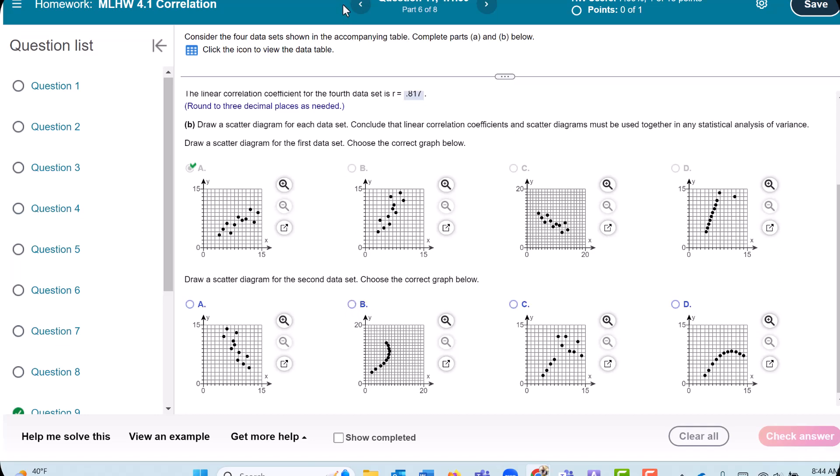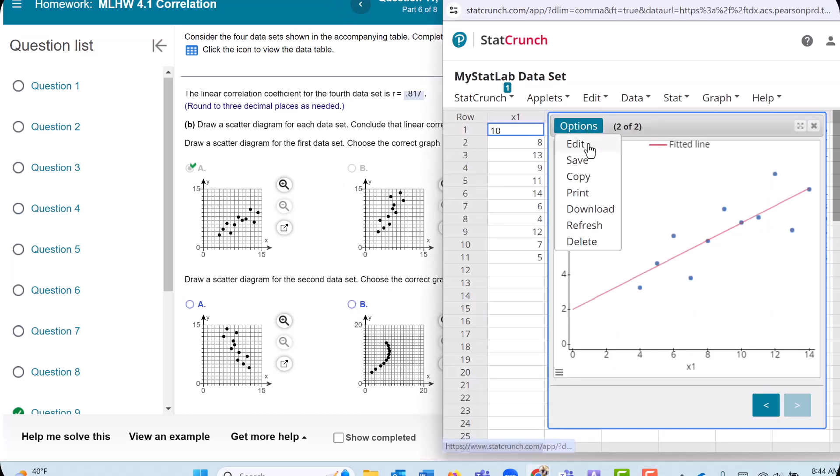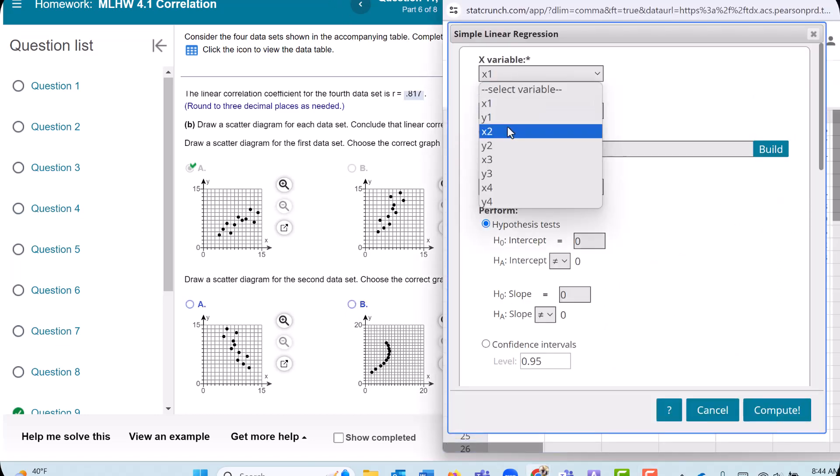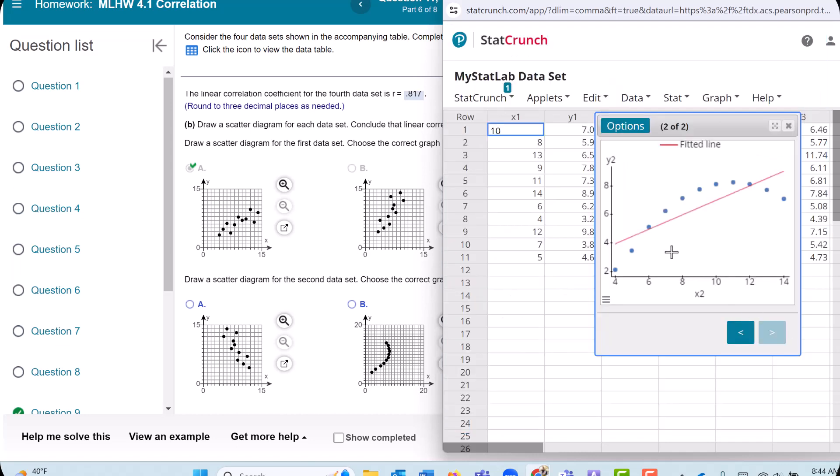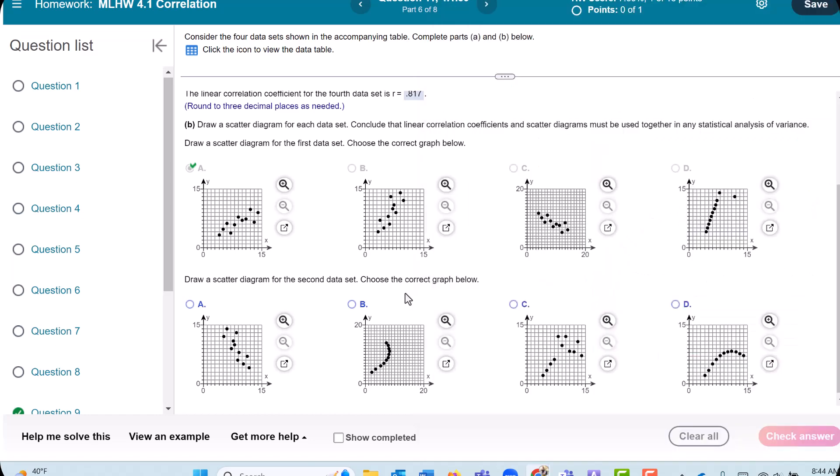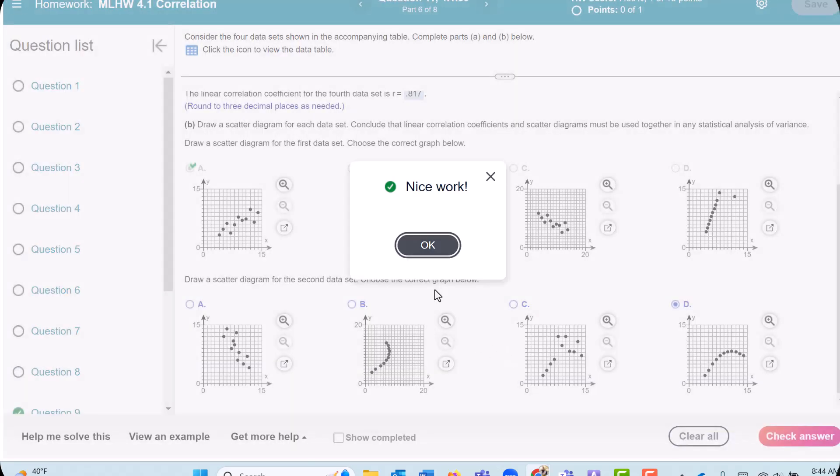Do the same thing for Dataset 2. So I'm going to go to Options and Edit, X2 and Y2. Okay, here's this one here. It's kind of curved like that. That's pretty distinct. Looks like it's D. Only one that looks like that.